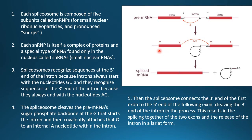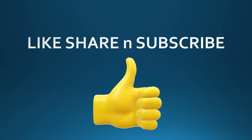The spliceosome then connects the 3' end of the first exon to the 5' end of the following exon, simultaneously cleaving the 3' end of the intron. The intron is released in lariat form and degraded, while the two exons are joined together. This is how the pre-mRNA is processed, and we get a mature mRNA consisting only of exons, with a 5' cap and a 3' poly-A tail.